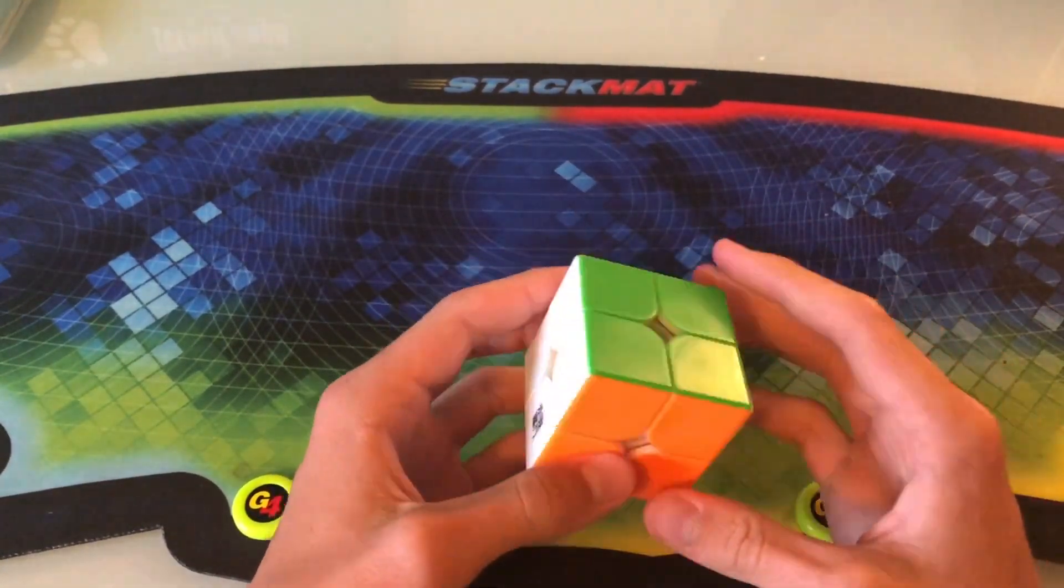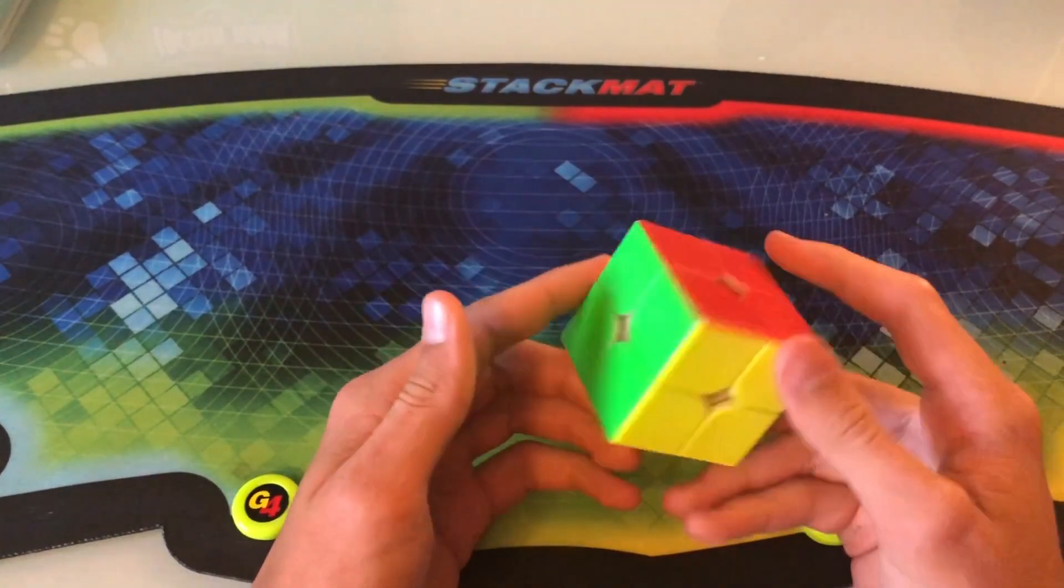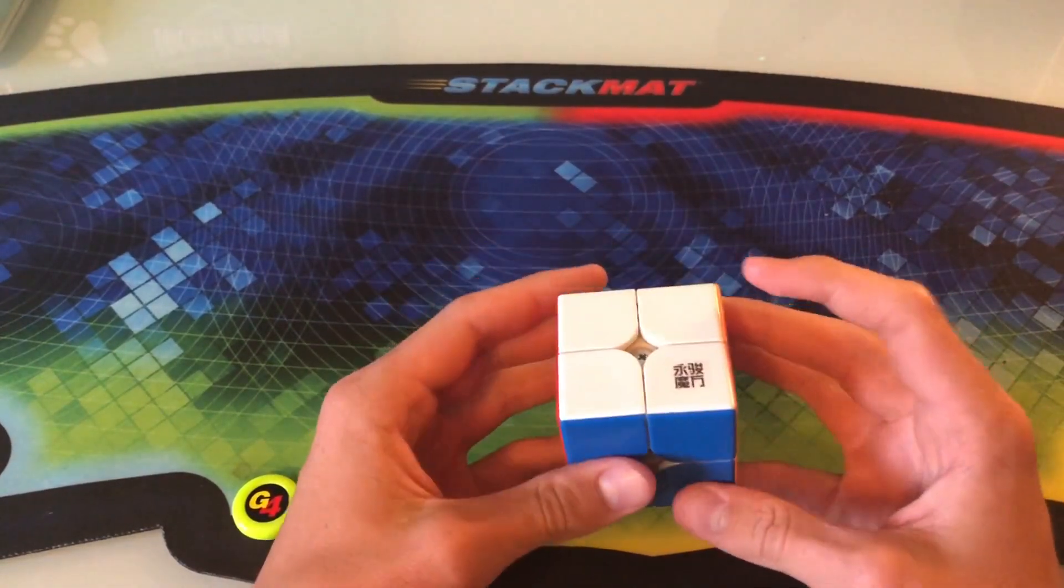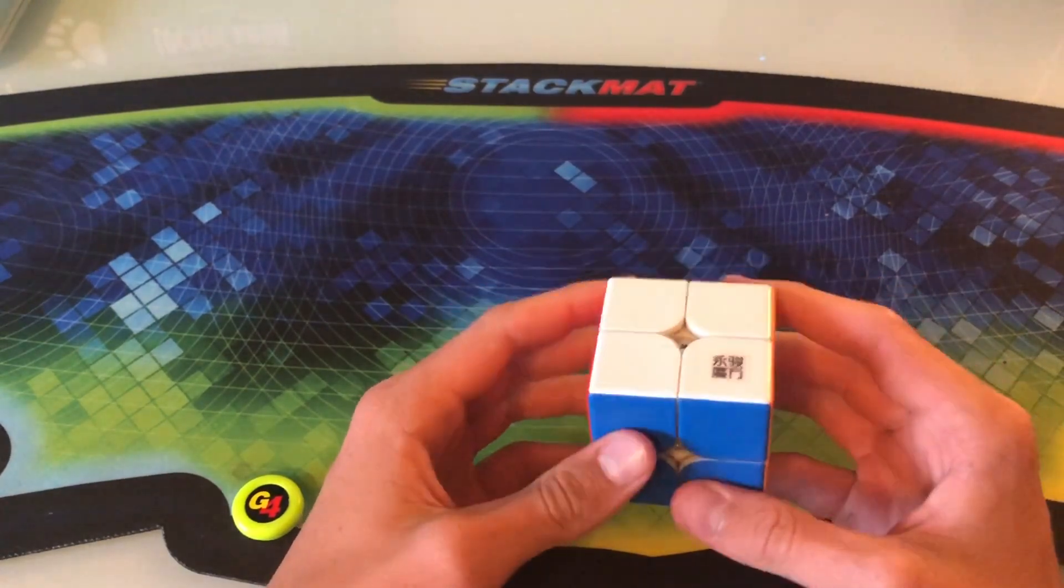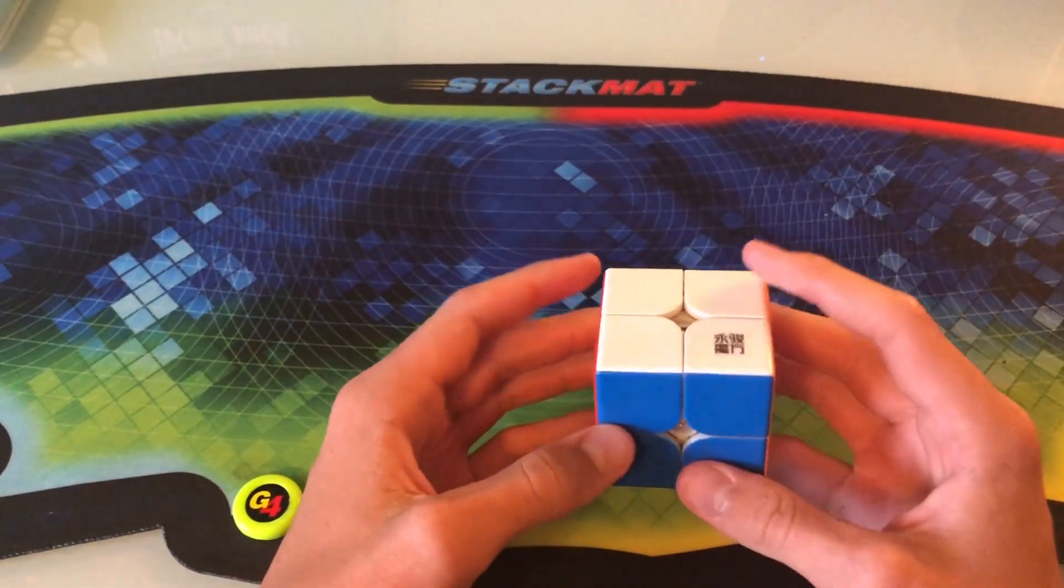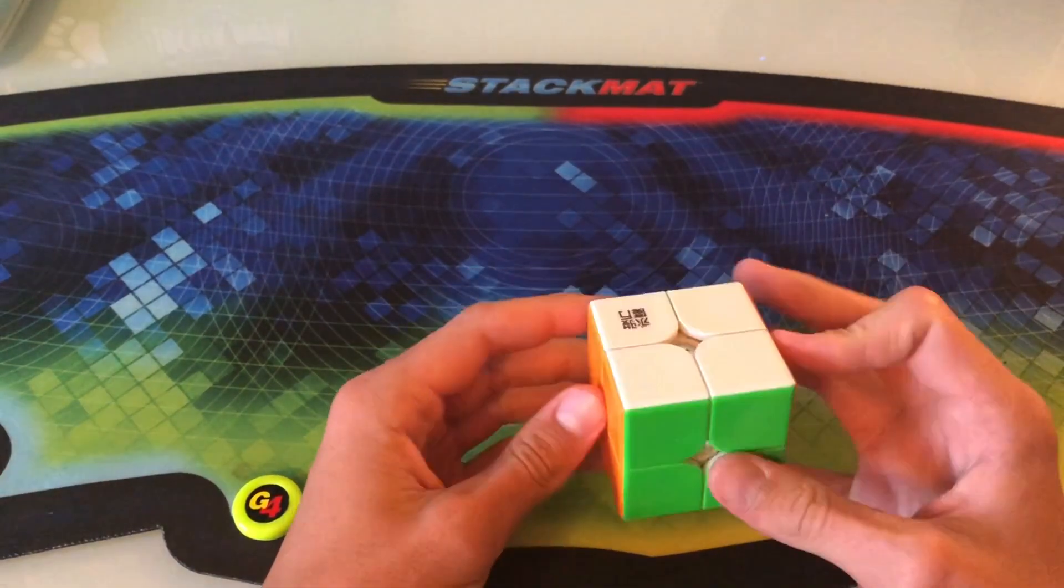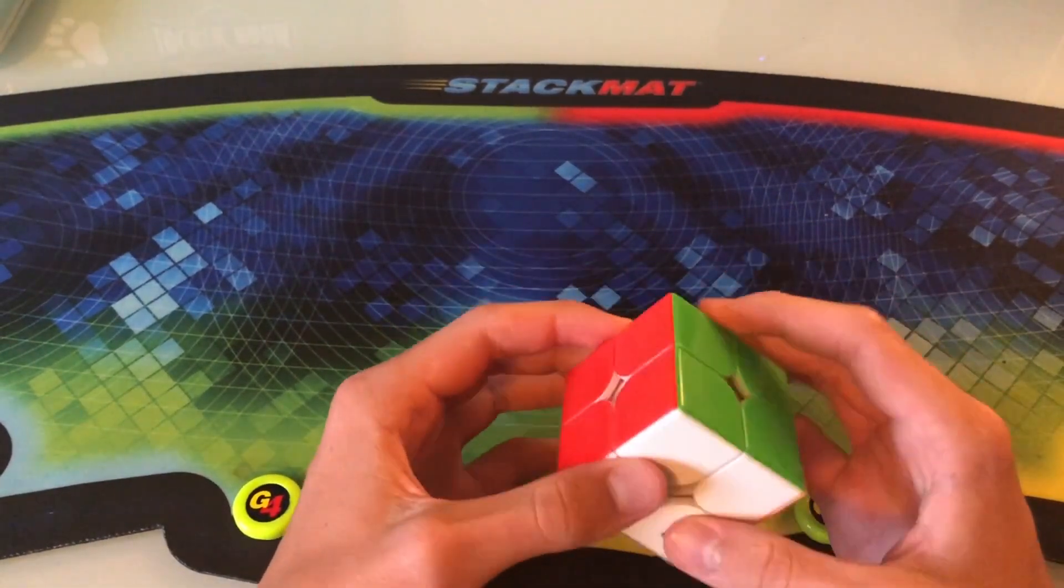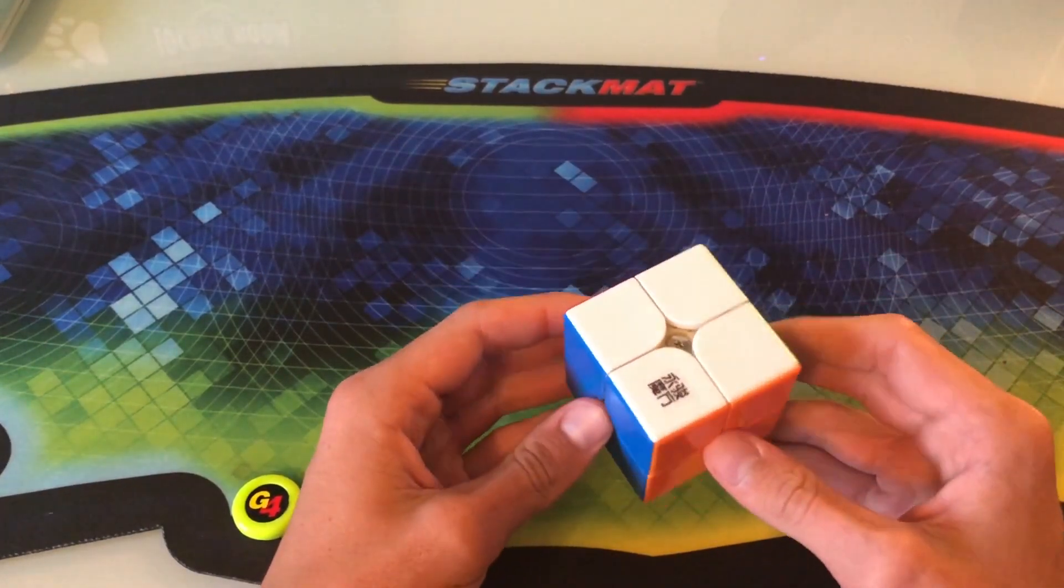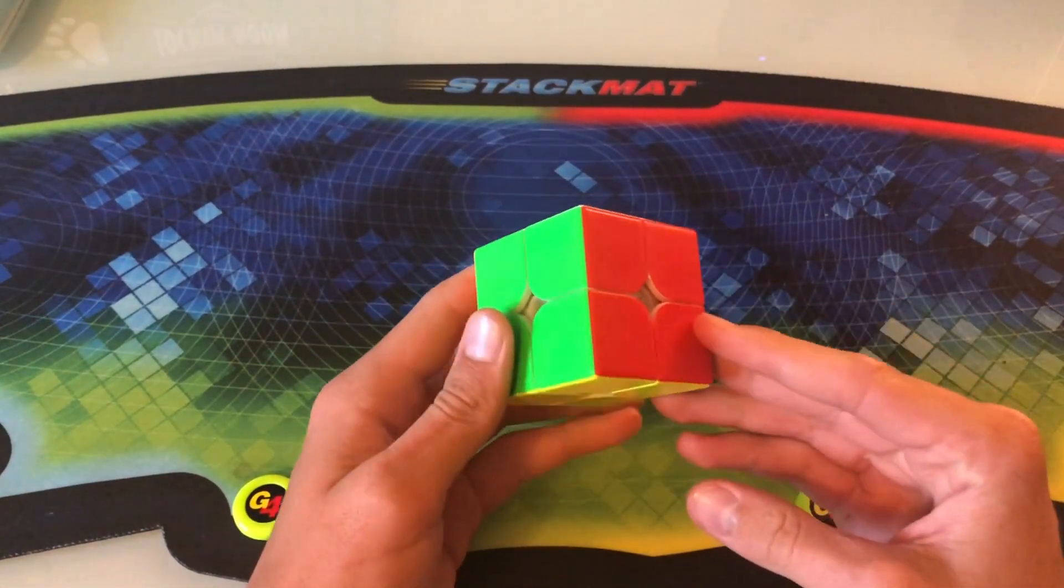If you have any of the other cubes from this budget line, such as the Yu Suu, the Yu Shuang, or the one that most people know, the YJ Yu Long 3x3, it's the same exact color shades as that. So if you like those, or if you've seen those before and you liked them, then you shouldn't have any problems here.